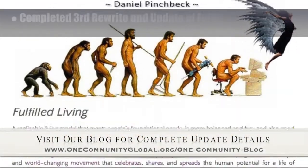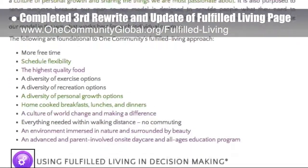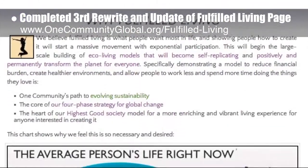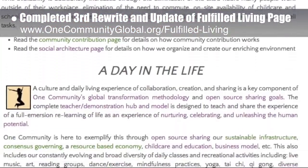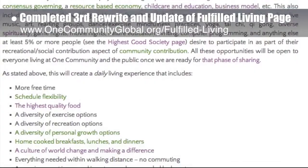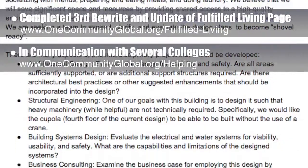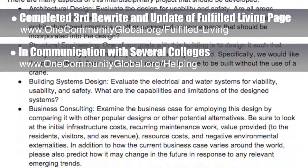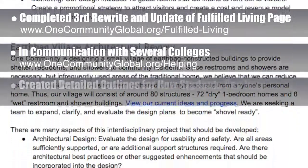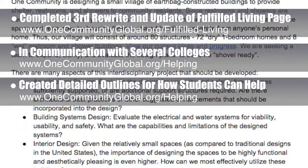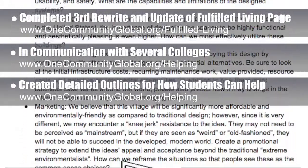This week the core team completed our third rewrite and extensive content update of the Fulfilled Living page that describes why we consider a Fulfilled Living model as absolutely essential to our global transformation model capable of creating a global golden age through building self-replicating teacher demonstration communities, villages, and cities. Behind the scenes, we've also been in communication with several colleges interested in adding our project to the options available to their graduate students. Here are examples of the work we've done to assist with this by creating detailed outlines of how students can help, all happening in Google Docs behind the scenes. We've got one more of these to finish before we start really focusing on this source of help.